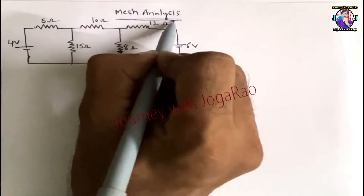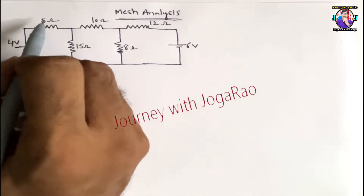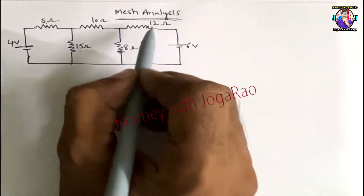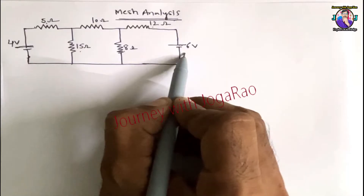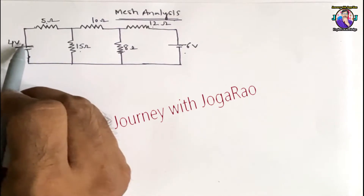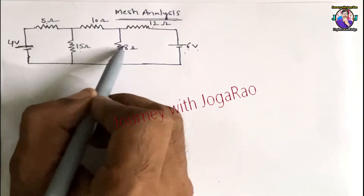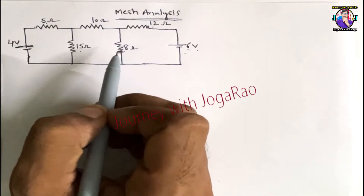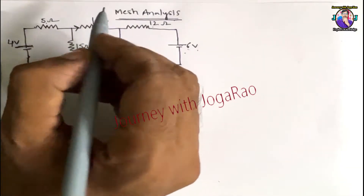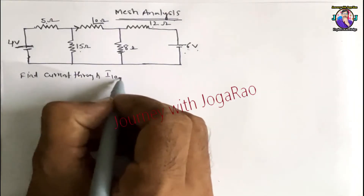Mesh Analysis — I will explain the circuit. It has 4 volts, 5 ohms, 15 ohms, 10 ohms, 8 ohms, 12 ohms resistors, and a 6 volts source — two voltage sources (4 V and 6 V) and a total of 5 resistors. We need to find the current through the 10 ohms resistor.